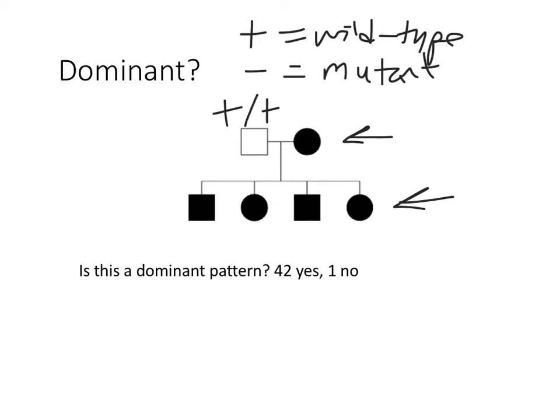So if this is dominant, the unaffected parent is definitely plus/plus, because if it was dominant and that parent had a minus allele, they would be a filled-in symbol — it only takes one dominant mutation to cause the phenotype. So the genotype of the black circle, the mom, is either plus/minus or minus/minus. They either have one mutant allele or both mutant alleles. Can we tell the difference? Can we use information in this pedigree to predict mom's genotype?